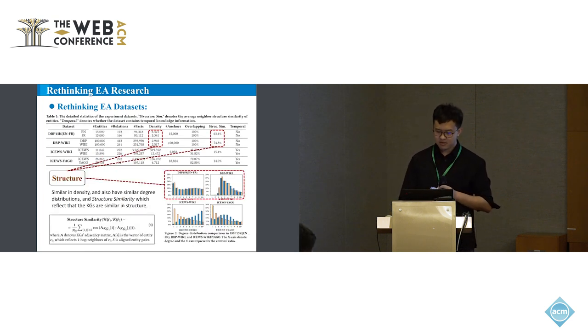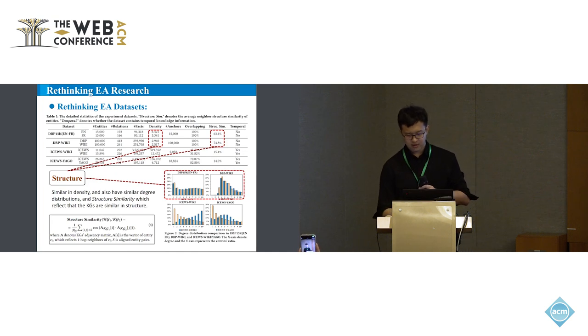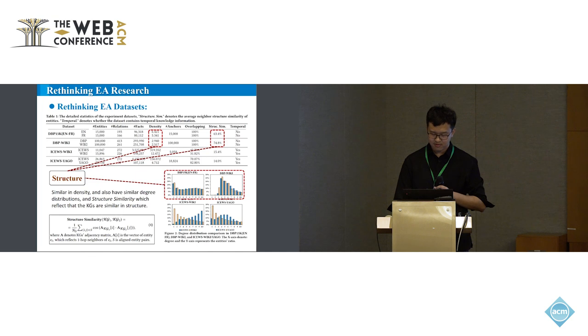For structure, to evaluate the neighborhood similarity between KGs, we introduce a new metric called structure similarity, which is the average similarity of aligned neighbors for aligned entity pairs. The KGs of bilingual DBP and DBP Wiki are similar in structure similarity and density, and also have similar degree distributions as shown in the figure, which reflects that the KGs are similar in structure.